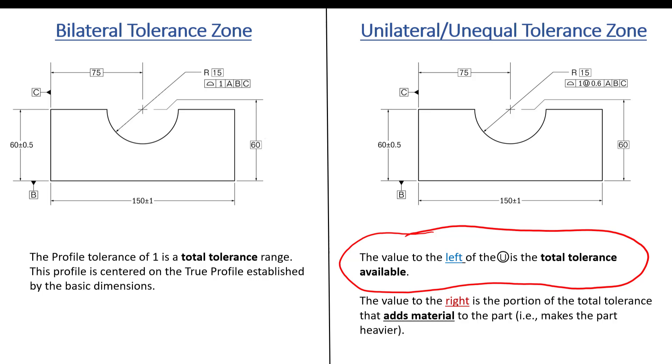It's right here. So the value to the left of the U is the total tolerance. So that's just like this statement here. That one millimeter that's in there, that is still the same. It is the total tolerance available. Nothing changes about that. What does change is down here. The value to the right is the portion of the total tolerance that adds material to the part. So it's going to make it heavier. And I'm going to show you here what these tolerance zones look like just in a second. But remember that the value on the right, the way that it's stated in the standard, must always add material to that feature. So in this case here, this is a radius of 15. So it states 0.6. So we're going to be adding 0.6. And then the remaining amount is going to be the 0.4.